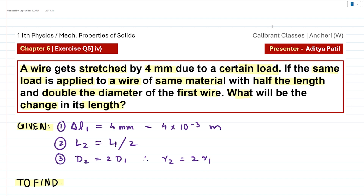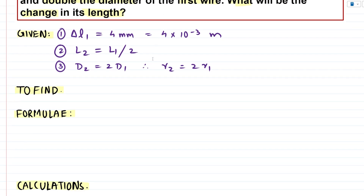Apart from this, the wire is of the same material and the same load is applied — conditions we will use later in the numerical. Using these quantities, we have to find the change in length for wire 2, so delta L2 is what we have to find, which is unknown to us.